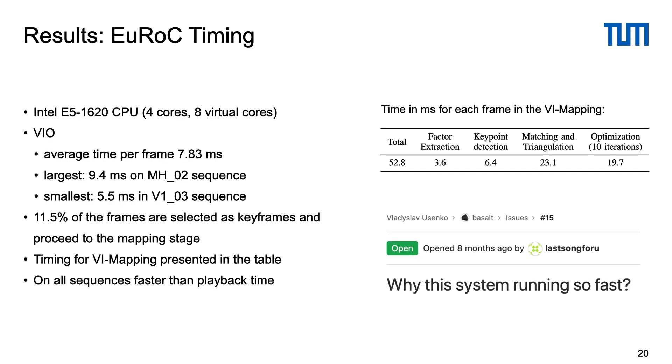Our implementation is well parallelizable and runs faster than real-time on modern multi-core CPUs. In our experiments, average processing speed was around 8ms for the VIO and 50ms for all stages of the mapping per frame.